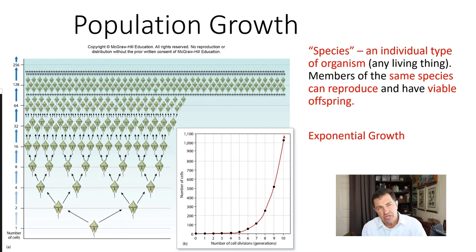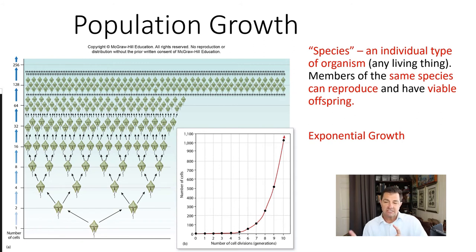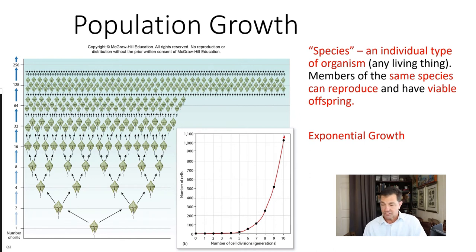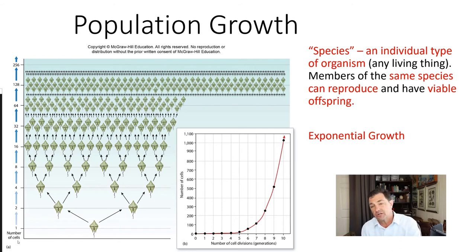That's a good definition for species for most biology. Most living things are capable of a tremendous rate of reproduction. For example, this organism undergoing exponential growth, starting with just one or two organisms, could very quickly go from one to two to four to eight — and you can see it just takes off. That's called exponential growth.